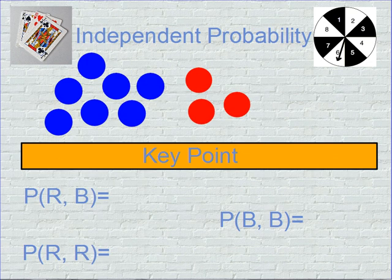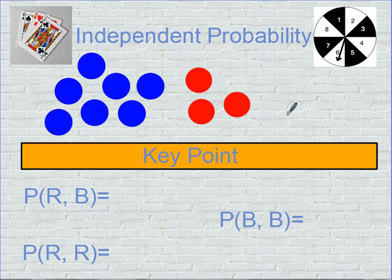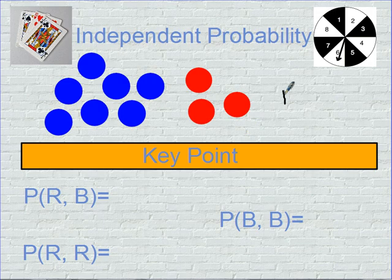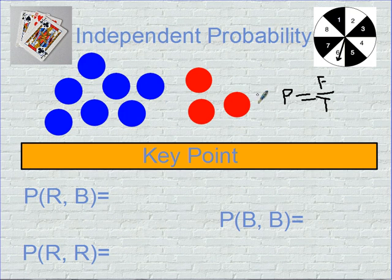Today we're going to talk about dependent and independent probability. First we're going to start off with independent probability, but before we do so, let's review a couple basic things. When we're talking about probability, the probability of an event happening is the favorable outcome over the total number of outcomes. The probability equals the favorable outcomes — the ones we want to happen — over the total possible outcomes that could happen.